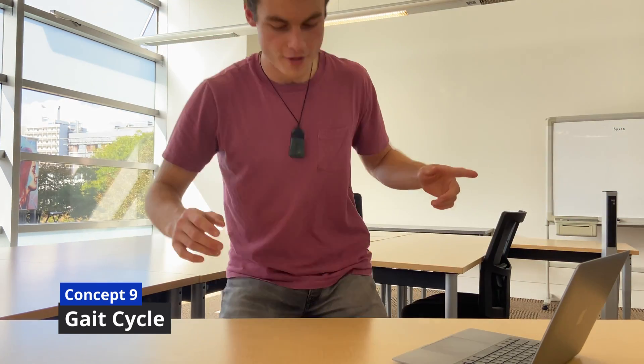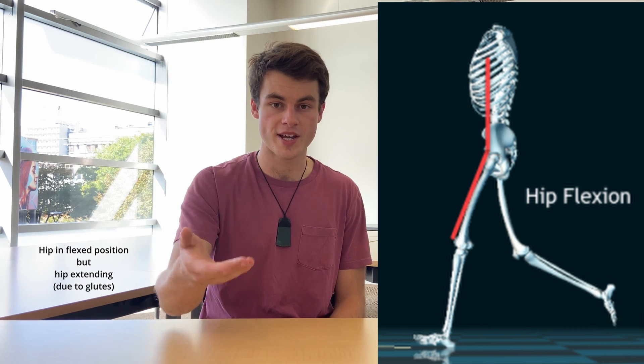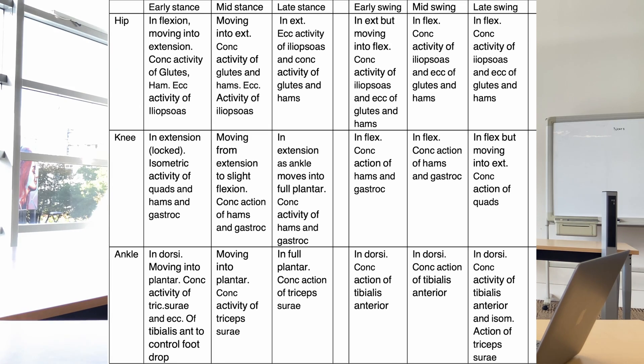Concept number nine is the gait cycle. When we walk, each joint goes through a repetition of different movements enabling that specialized motion. A key confusion to avoid: don't mix up the position a joint is in versus what the muscles are doing at that time. For example, when your heel first hits the ground, your hip is in flexion — quite far forward — but the hip muscles are extending because they're pulling backwards. I recommend walking around and thinking about each joint's position and muscle action, then compiling it into a table and using active recall to test yourself.